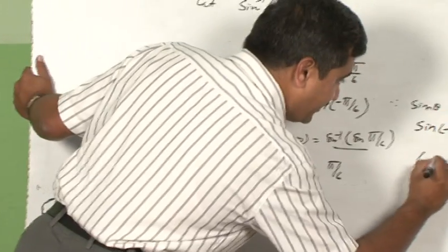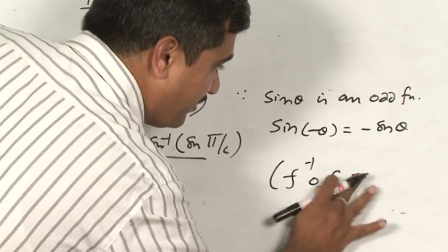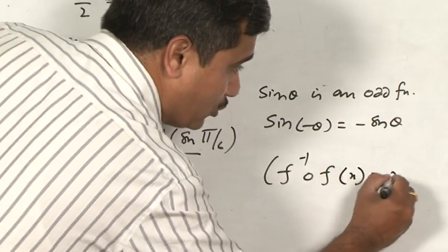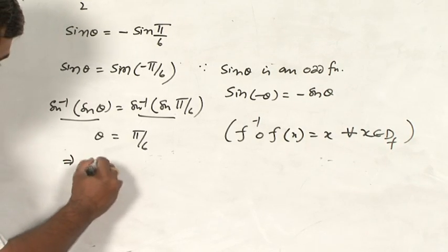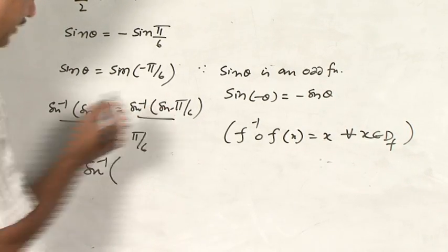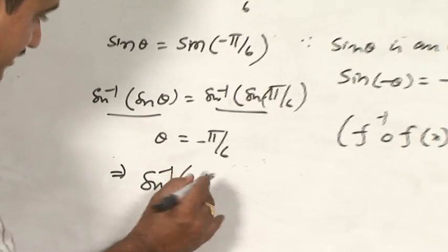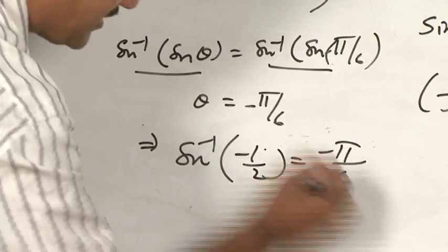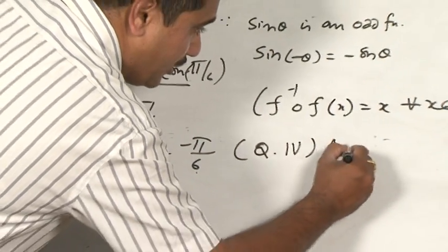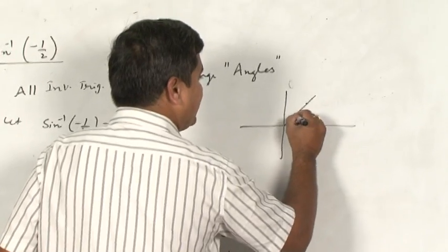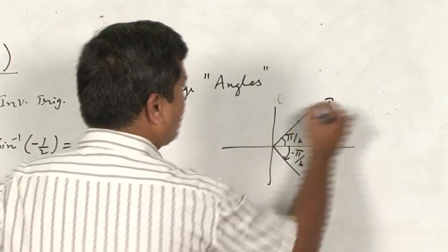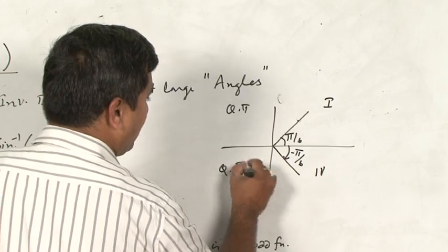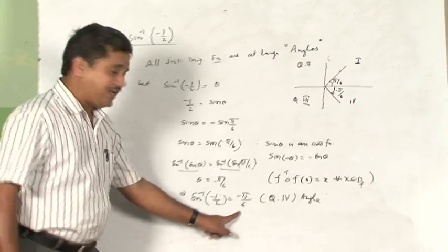The rule applied here is f⁻¹(f(x)) = x for every x in the domain of the function. So θ = -π/6, which means sin⁻¹(-1/2) = -π/6. This is a fourth-quadrant angle — in the clockwise direction, it is -π/6. We know that sine is negative in the fourth quadrant, which is why we got a negative angle.